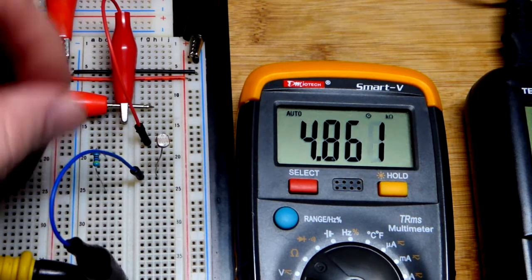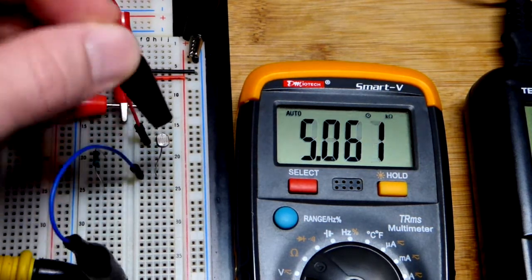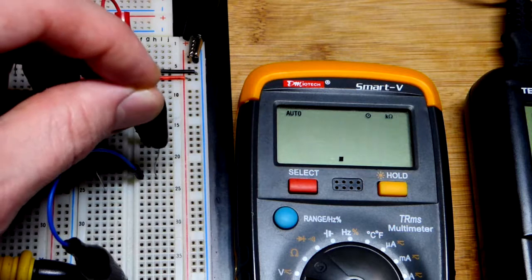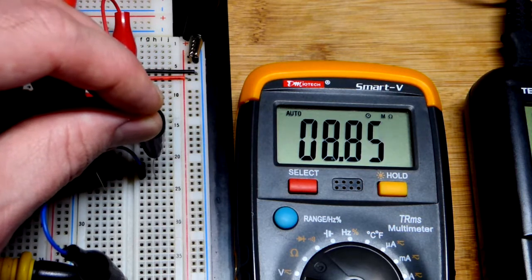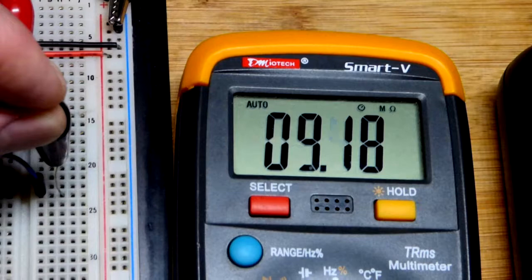Now we're going to make it so it doesn't conduct hardly at all. I'm going to take this alligator clip cover and cover it up and it'll get really dark. Now we're in the millions of ohms before we were in the thousands.